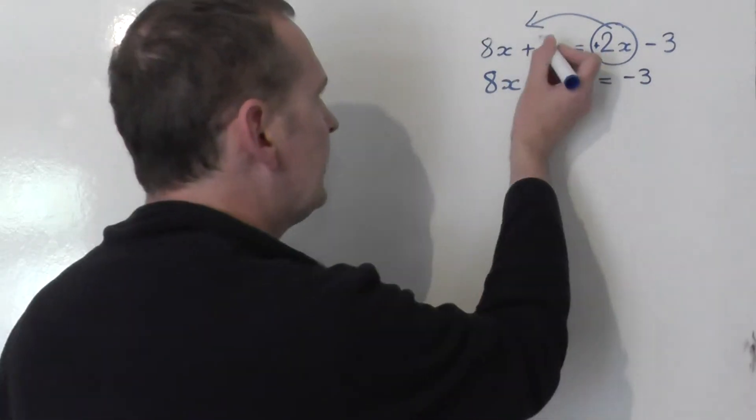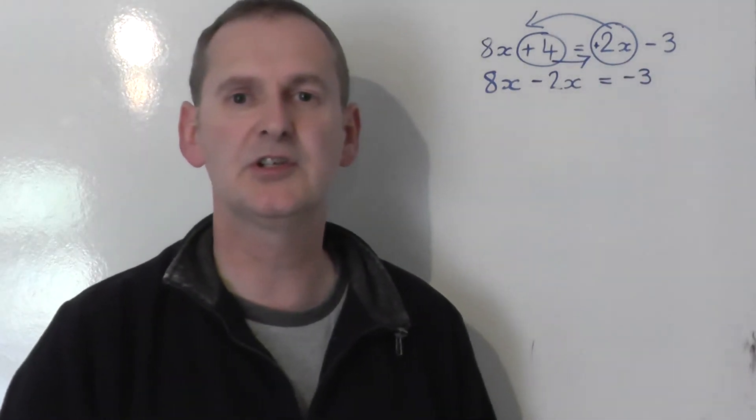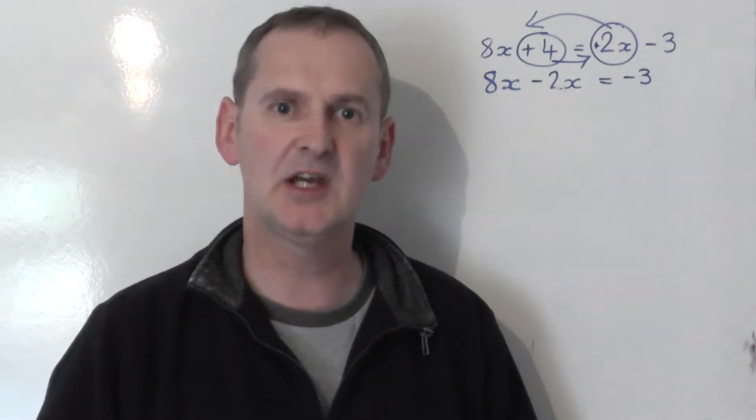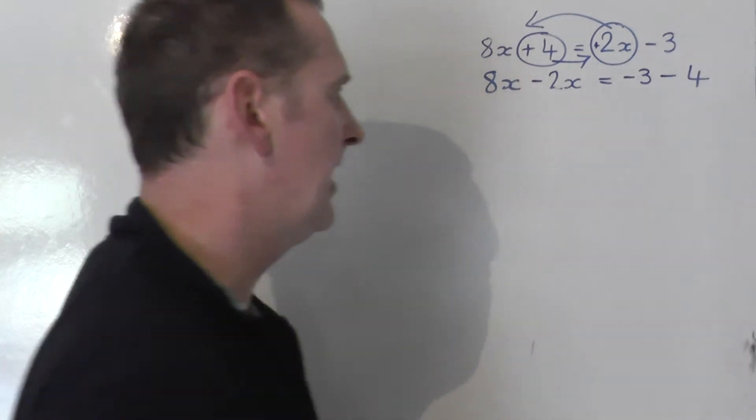OK, that plus 4, that's on the wrong side. I need to join it on the other side with the minus 3. So the plus 4 swap sides. Plus 4, take it over to the other side, becomes minus 4. So we get on the right-hand side a minus 4.